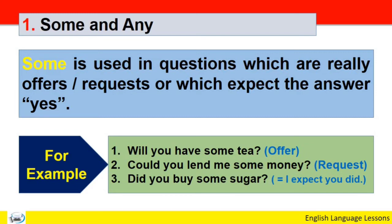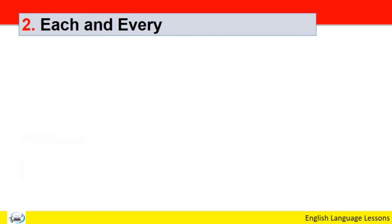Number 3: did you buy some sugar? یہاں پہ answer جو ہے وہ yes expect کیا جاتا ہے. I expect you did. یعنی یہ expectation ہوتی ہے کہ sugar خریدی گئی ہے تو یہاں پہ بھی question میں some کا استعمال ہوا.